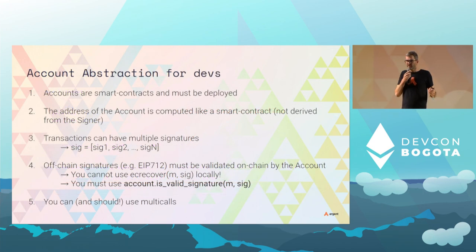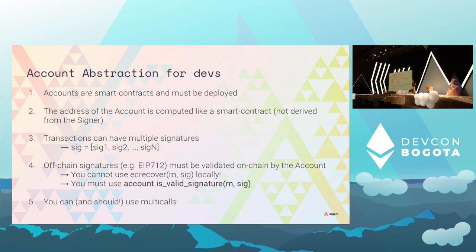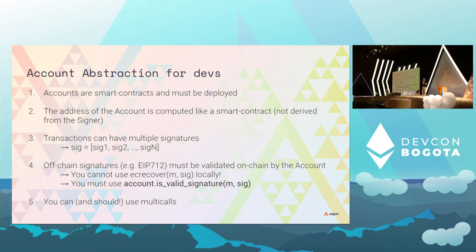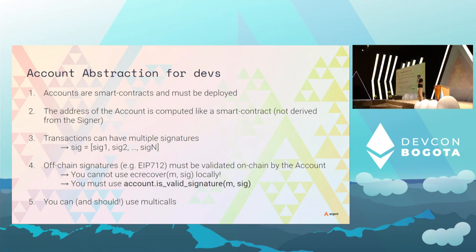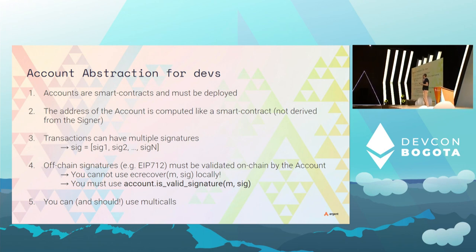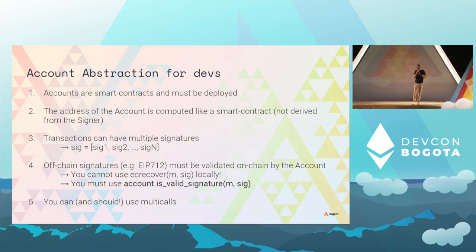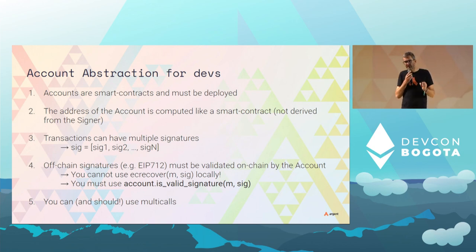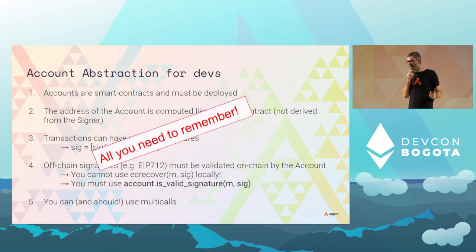Since this is a developer conference, here are five things to remember if you want to build for account abstraction. First: accounts are smart contracts and need to be deployed — wallets will handle this, but be aware. Second: the account address is computed like a smart contract address, so there's no link to the signer. Third: transactions can have multiple signatures — don't assume an account has only one signer; it could be a native multi-sig. Fourth: to verify an off-chain signature, don't use ecrecover — ping the account with isValidSignature. Fifth: use multi-calls, because they improve UX by at least a 10x factor.